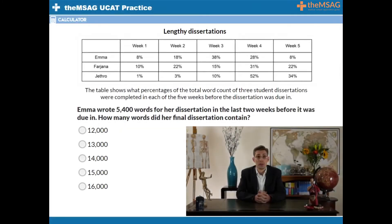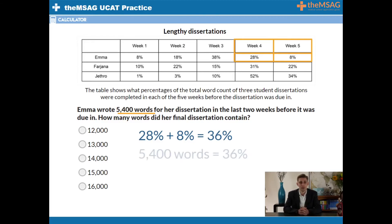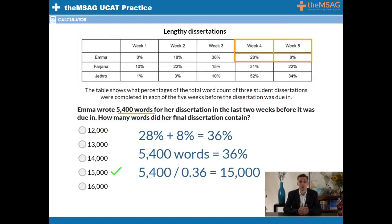Question 3 also applies to the same table. Emma wrote 5,400 words for her dissertation in the last two weeks before it was due in. How many words did her final dissertation contain? In those two weeks she completed 28% plus 8%, which equals 36% of her total word count. The question tells us that she wrote 5,400 words in this time period. Again we have an amount equaling a percentage. So using our shortcut, 5,400 divided by 0.36 gives us 15,000 words. Therefore this is the total word count of her dissertation and the correct answer choice is option D.